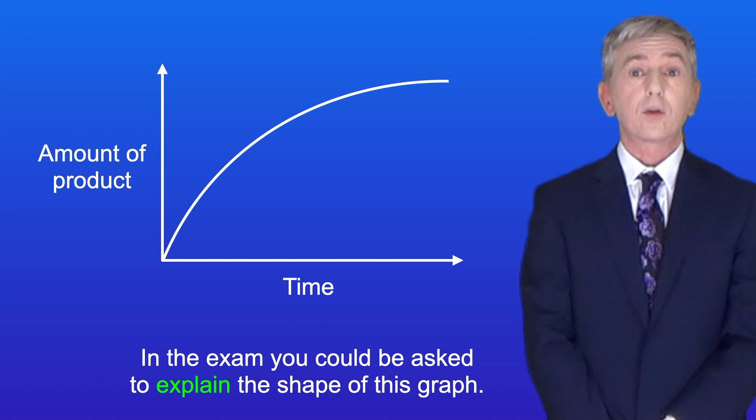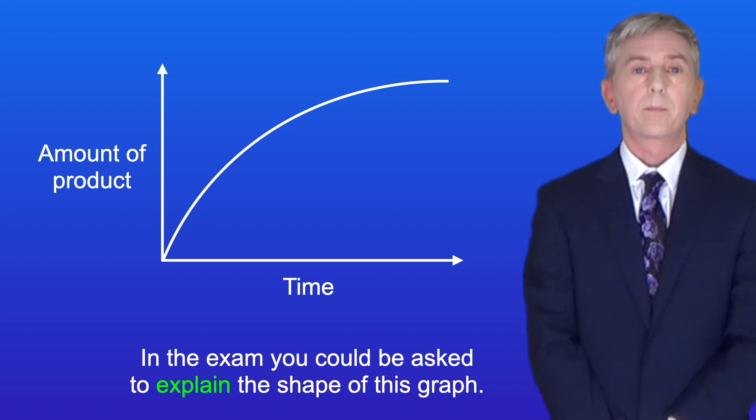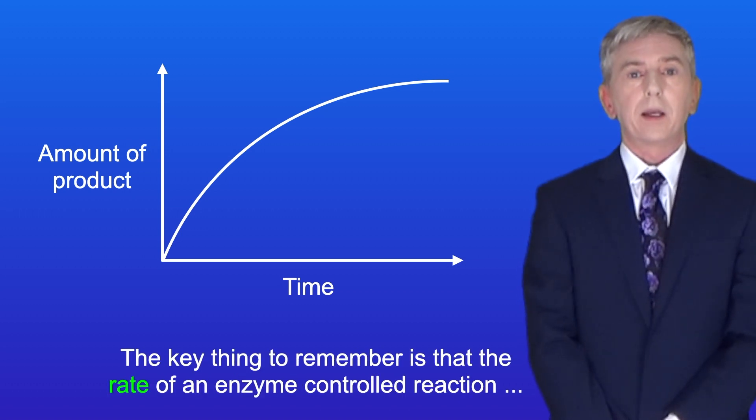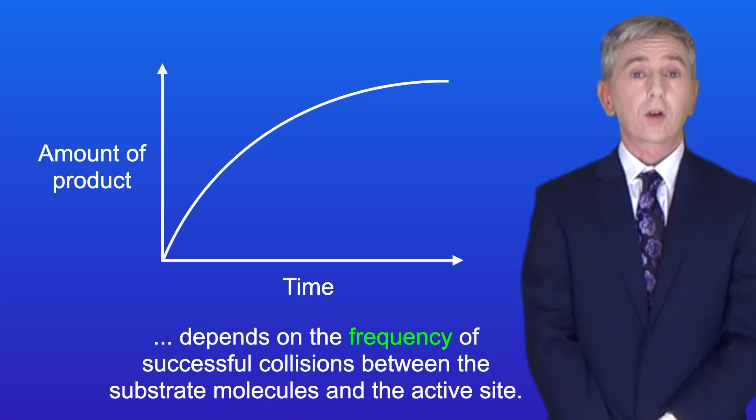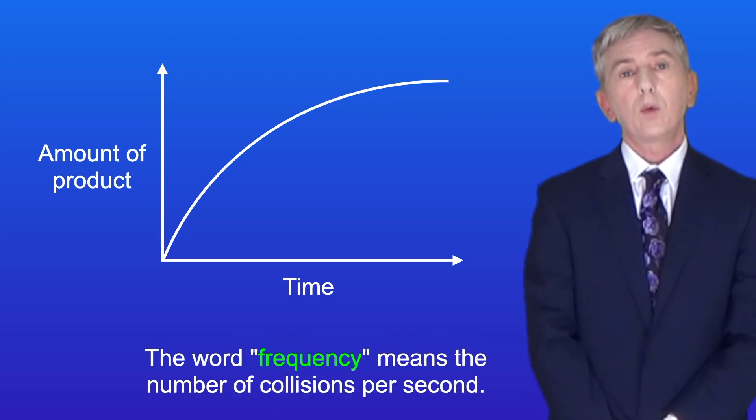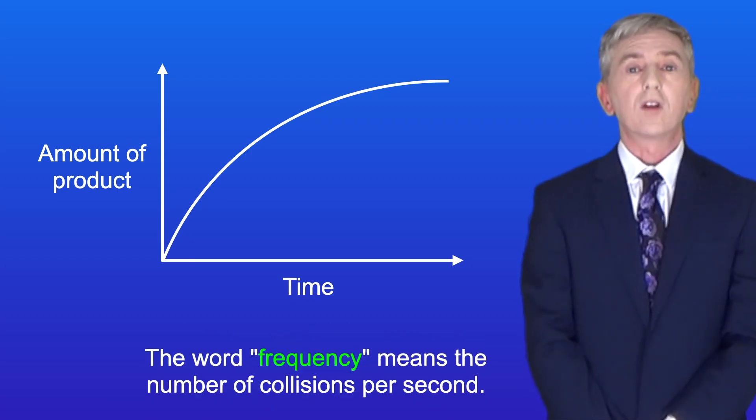Okay now in the exam you could be asked to explain the shape of this graph. Now the key thing to remember is that the rate of an enzyme controlled reaction depends on the frequency of successful collisions between the substrate molecules and the active site. And the word frequency means the number of collisions per second.